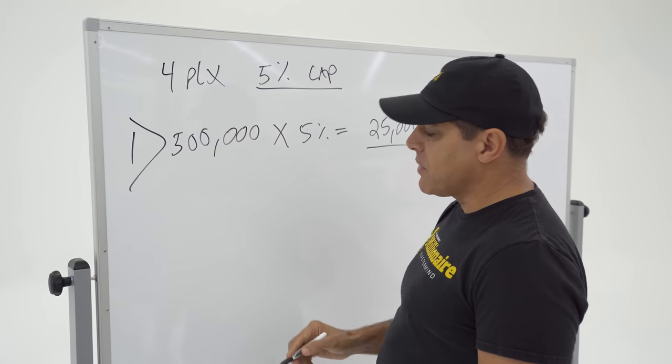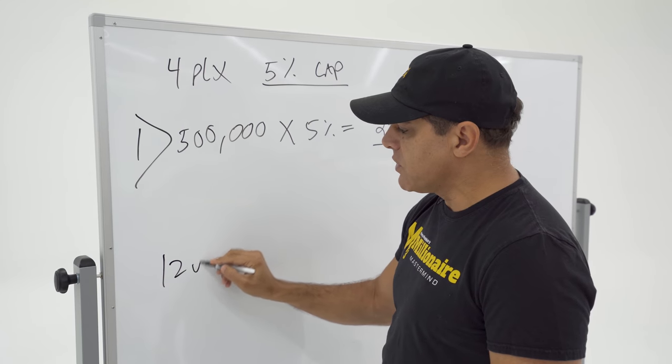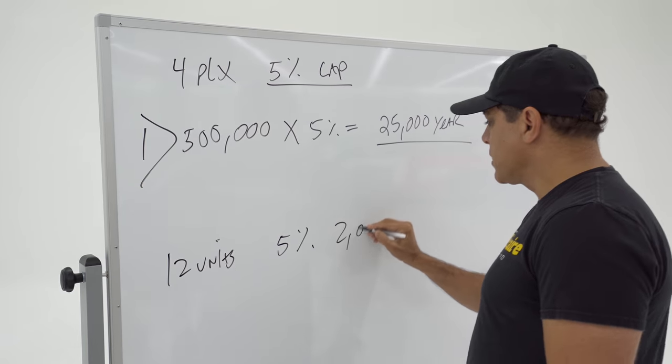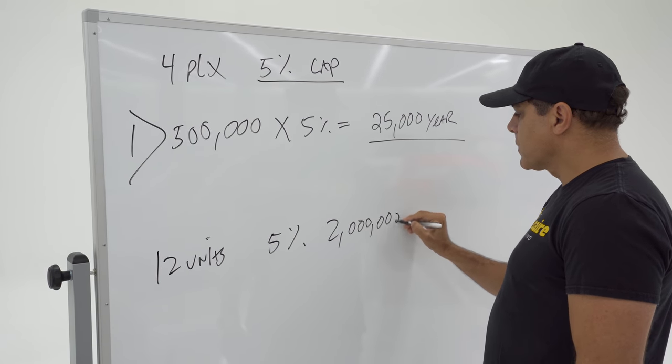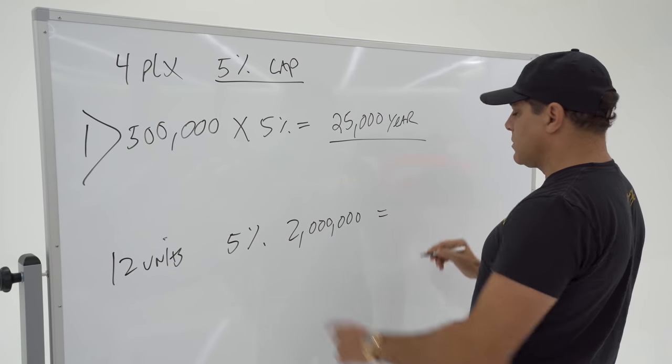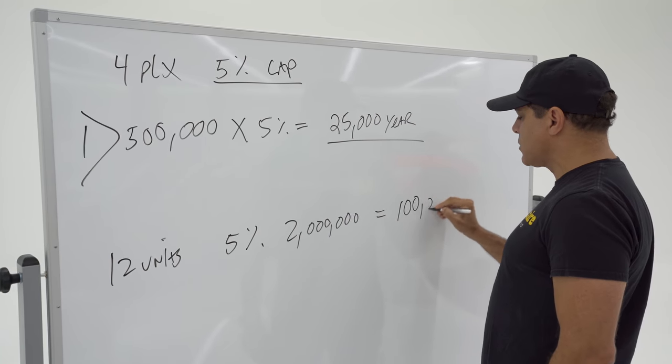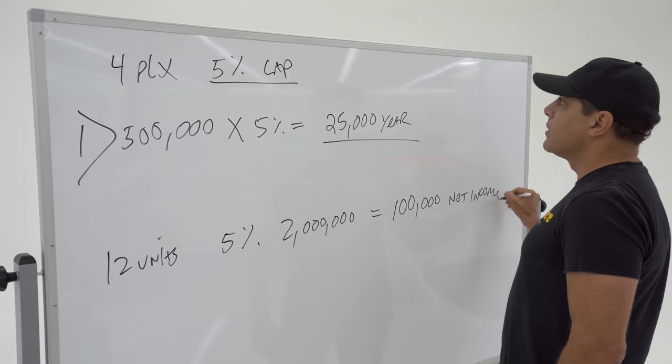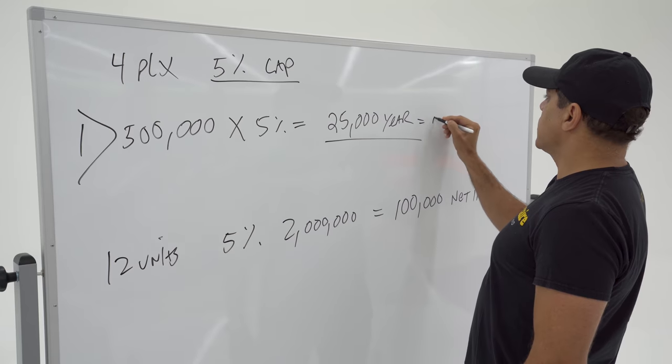Now that's one option, or you can buy a bigger property at the same return, 5% cap rate. Let's just say 12 units at 5% for $2 million. That means if you buy this cash, it'll be throwing off $100,000 a year in net income.